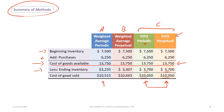With weighted average periodic, you calculate a single rate, making cost of goods sold and ending inventory easy to calculate. But under weighted average perpetual, you need to calculate multiple rates. The differences between weighted average and FIFO can be substantial: weighted average contains an average of all previous purchases, whereas FIFO contains only the most recent bank of inventory. Depending on purchase costs, these approaches could be very similar or very different.